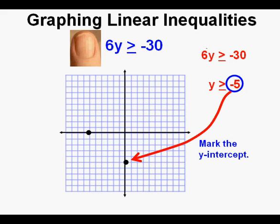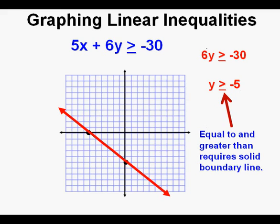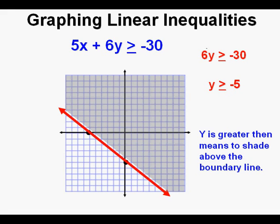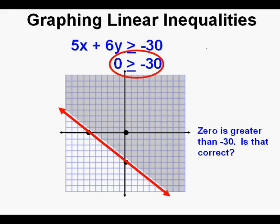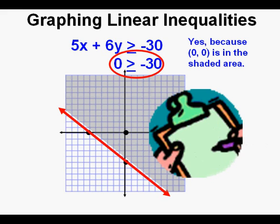Using the x and y intercepts we draw a line. What kind of line? It's a solid line since the symbol is 'greater than or equal to.' And since it's greater than, we shade upward from this boundary line. Finally we mark a point on the graph and use the point (0, 0) to test. Since both x and y are 0, that gives us 0 is greater than or equal to negative 30. Is that correct? Yes — 0 is in fact greater than or equal to negative 30. Because it's in the shaded area and part of the solution set, we've shaded correctly. Check.